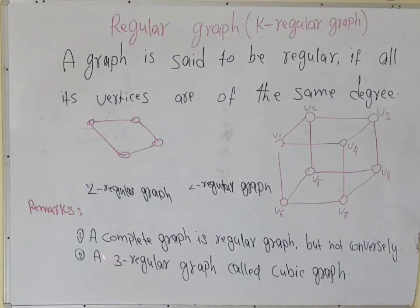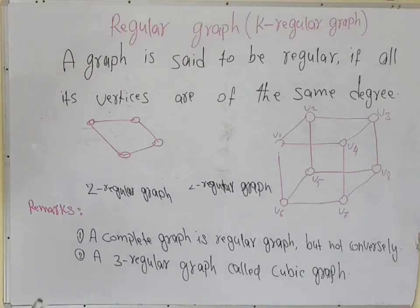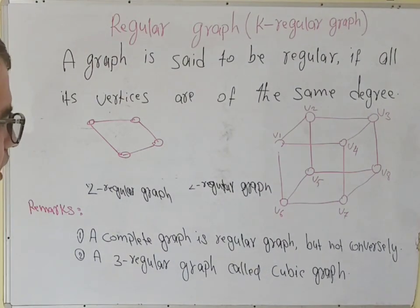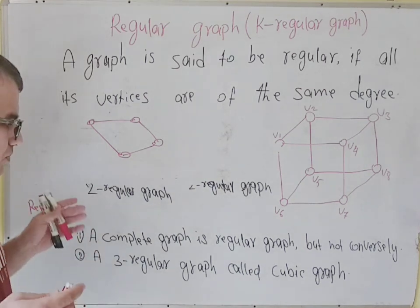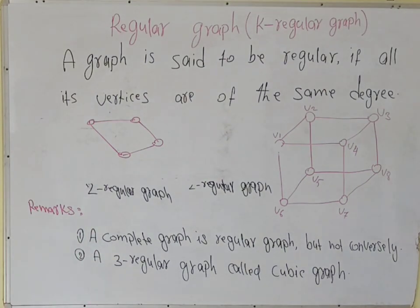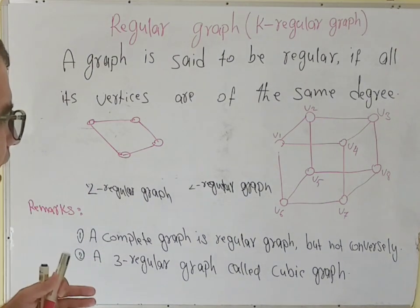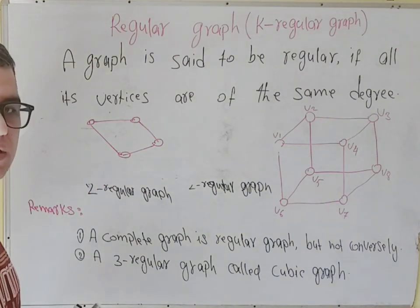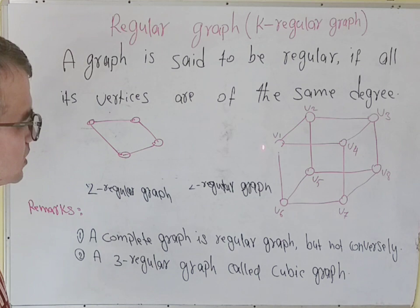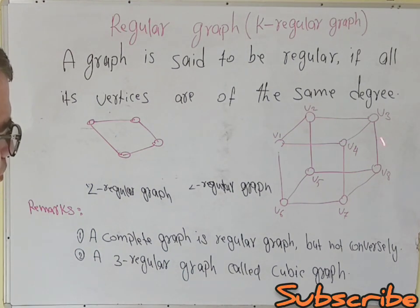A three-regular graph is called a cubic graph. A cubic graph is a regular graph where every vertex of the graph has degree three. This graph is a cubic graph — you can see it is a cubic graph.